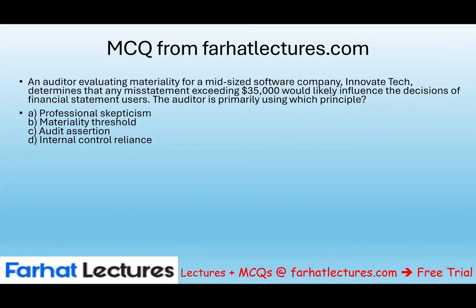Let's take a look at this multiple-choice question from FarhatLectures.com. An auditor is evaluating the materiality for a mid-sized software company and determines that any misstatement exceeding $35,000 would likely influence the decision of the financial statement user. The auditor is primarily using which principle? Is it professional skepticism, materiality threshold, audit assertion, or internal control reliance? You have to understand each one of those topics. Professional skepticism means maintaining a questioning mindset — always questioning everything you are looking at. Is this what we're doing here? No, it's not.